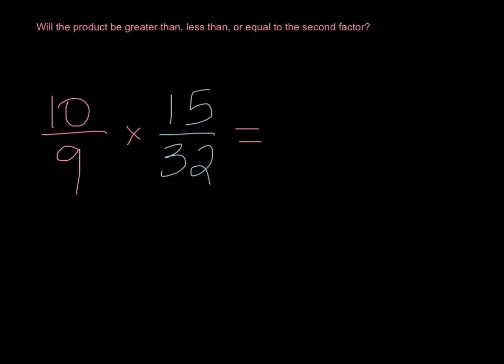Let's take a look at item six. Here we're asked, without multiplying, without multiplying at all, we want to know if the product of this equation, if x is going to be greater than, less than, or equal to that second factor, which is 15 over 32. Well, how can we predict this without solving it? Simple, simple. Let's talk about that.